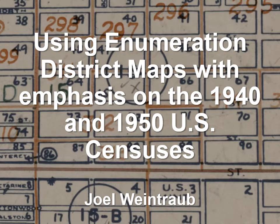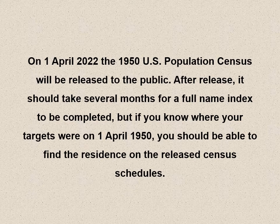Using enumeration district maps with emphasis on the 1940 and 1950 U.S. censuses. On April 1st of 2022, the 1950 United States Population Census will be released to the public. After release, it should take several months for a full name index to be completed. I anticipate a volunteer crowdsourcing project involving lots of people. But if you know where your targets were on April 1st, 1950, you should be able to find the residents on the released census schedules without waiting for that name index.